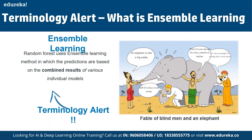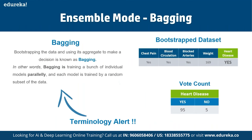This brings us to bootstrapping and bagging. Bootstrapping is an estimation method used to make predictions on a data set by resampling it. To create a bootstrap data set, we randomly select samples from the original data set — and the same sample can be selected more than once. For example, a bootstrap data set might include features like chest pain, blood circulation, and blocked arteries, with a yes-count of 95 and no-count of 5.